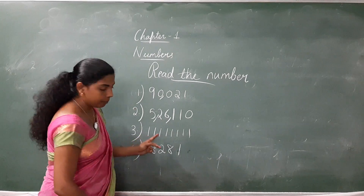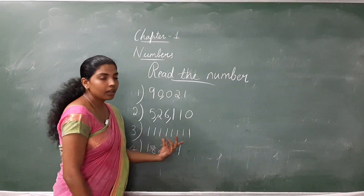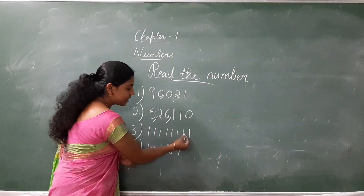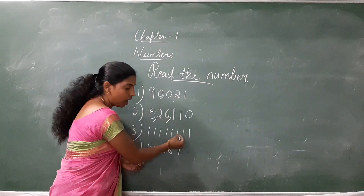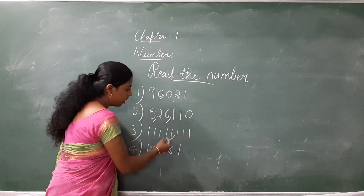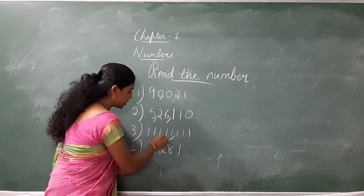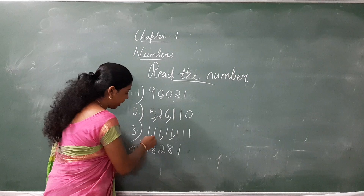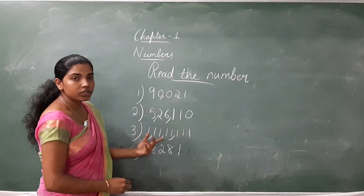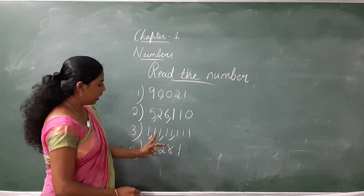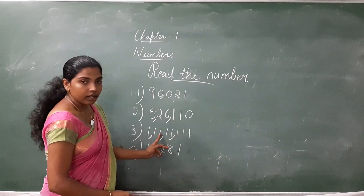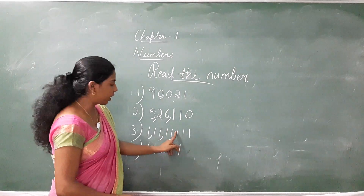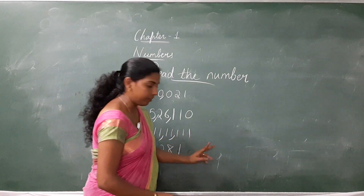Next number. We have to put a comma: ones, tens, hundred, thousand, ten thousand, lakh, ten lakh, and crore. So the number is one crore, eleven lakh, eleven thousand, one hundred and eleven.